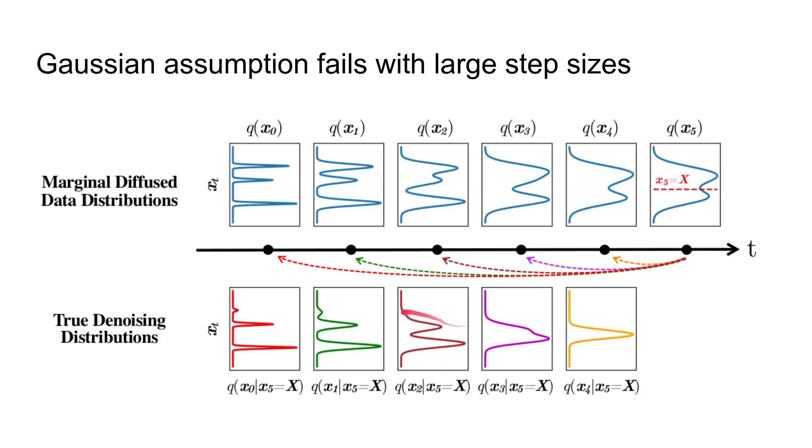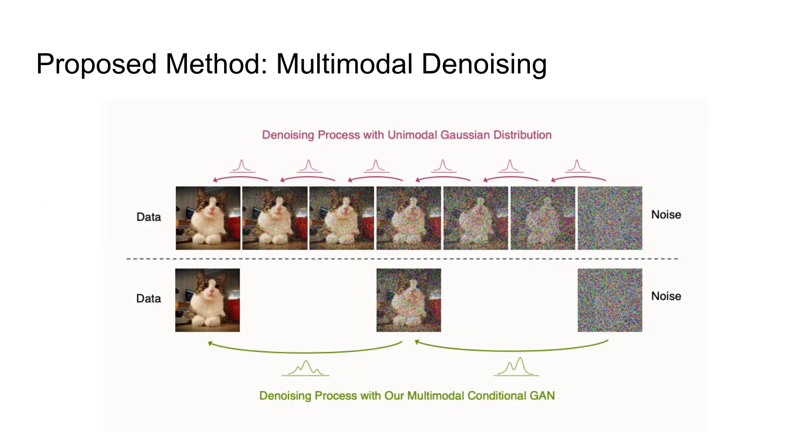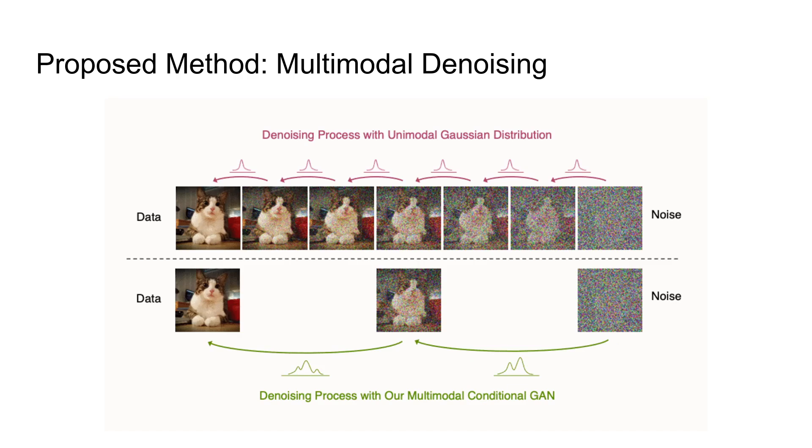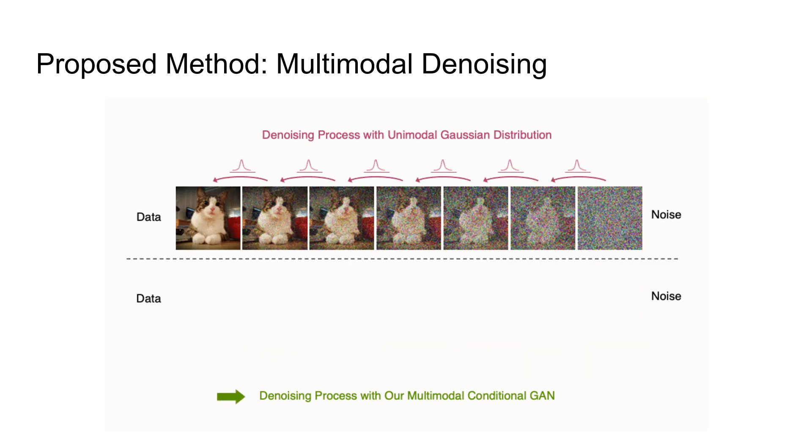However, if you want to go back multiple steps at once, the gaussian assumption falls apart. The denoising distribution becomes a multimodal complex distribution. So what can we do about this problem? Here's the basic idea behind the proposed paper: we want to go fast, therefore we want to go back multiple steps at a time. If the gaussian assumption fails, so be it. Don't make the gaussian assumption.